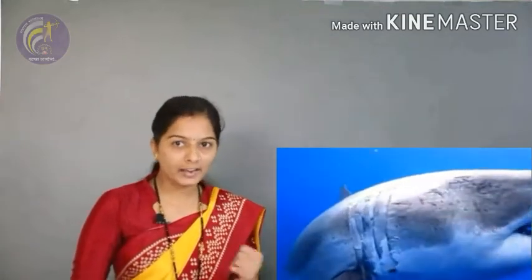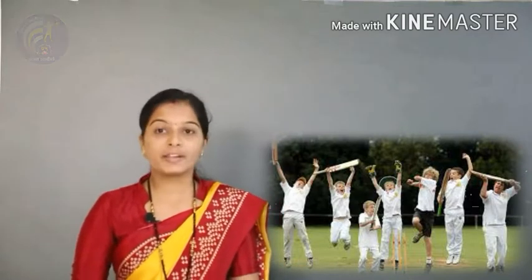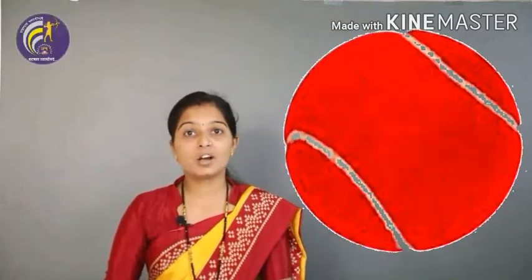Second example: It is round. It is made of rubber. Children play with it. Guess what it is. It is a ball.